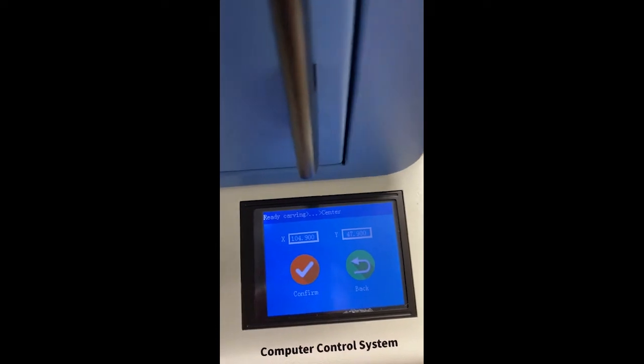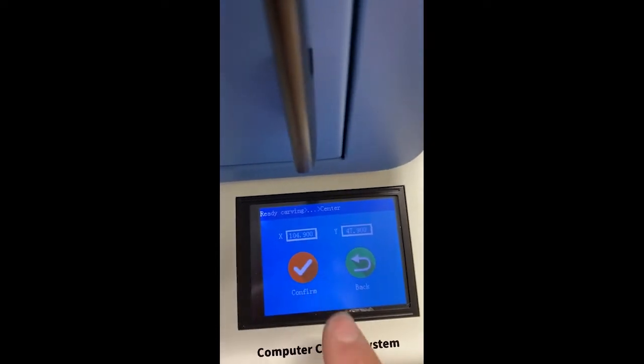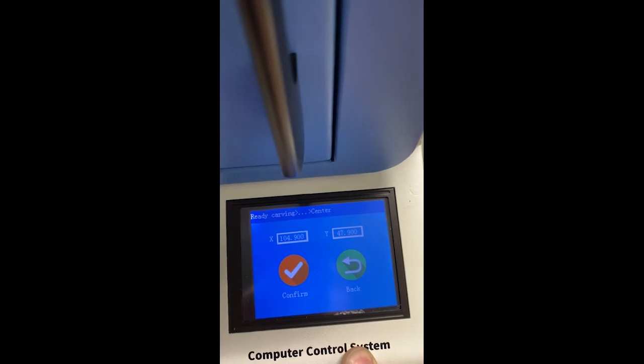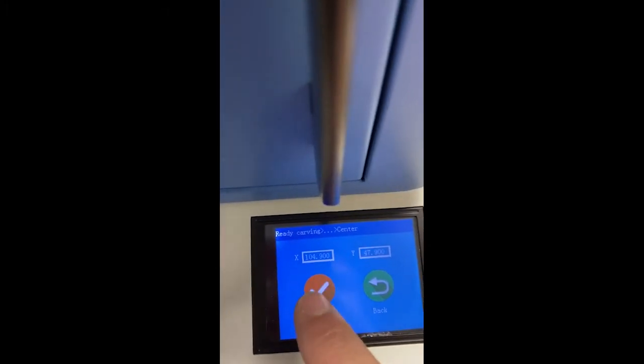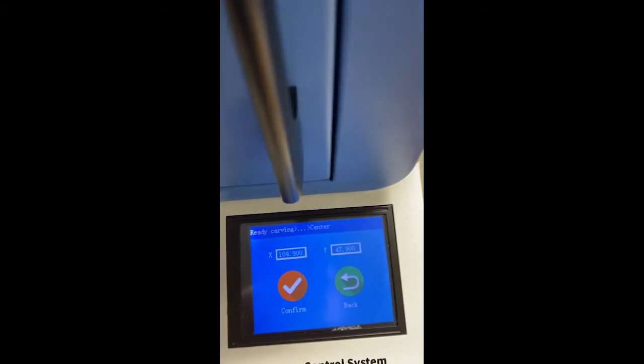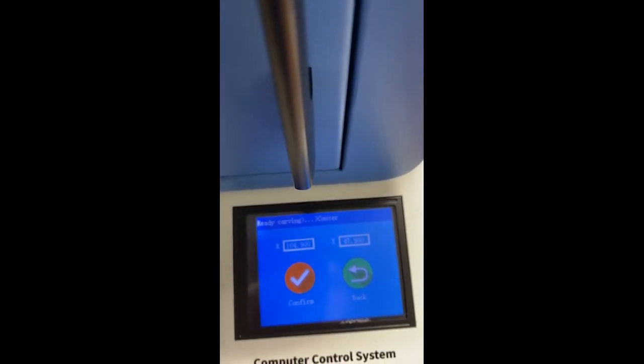So for example, if I needed to shift to the right on the X axis here, I would change that value. It's going to go from 104.9 to 105, technically, because the 0.9, if you add the one, it carries over to the whole value. So it'd be 105.